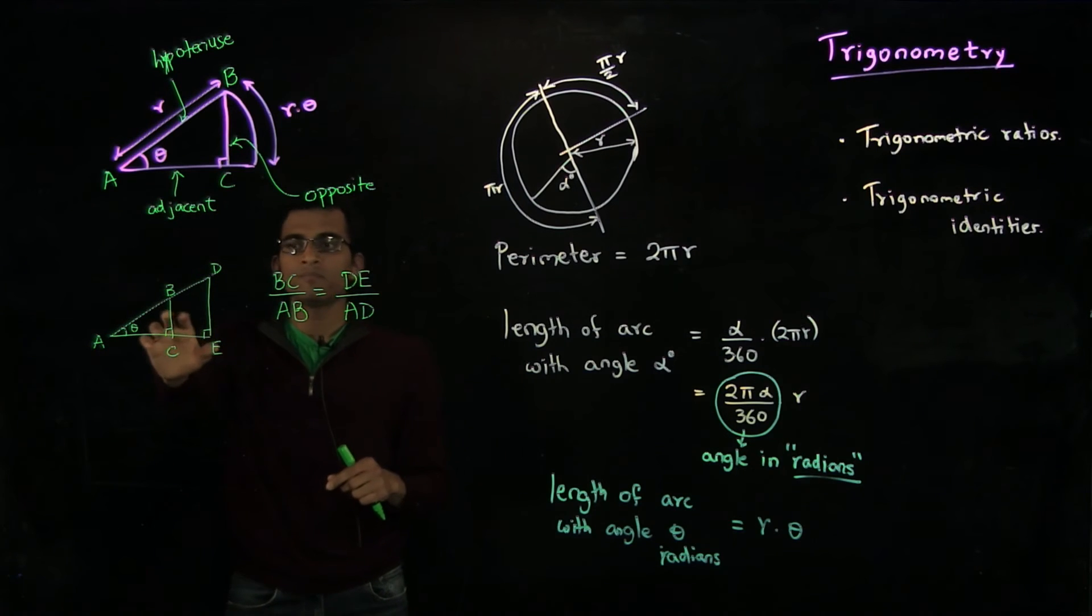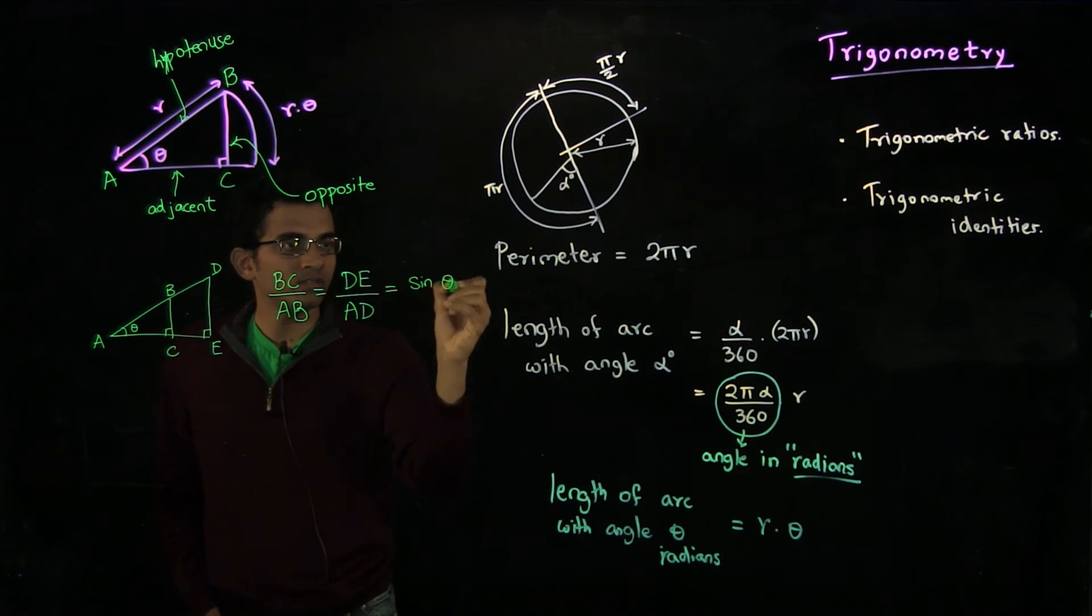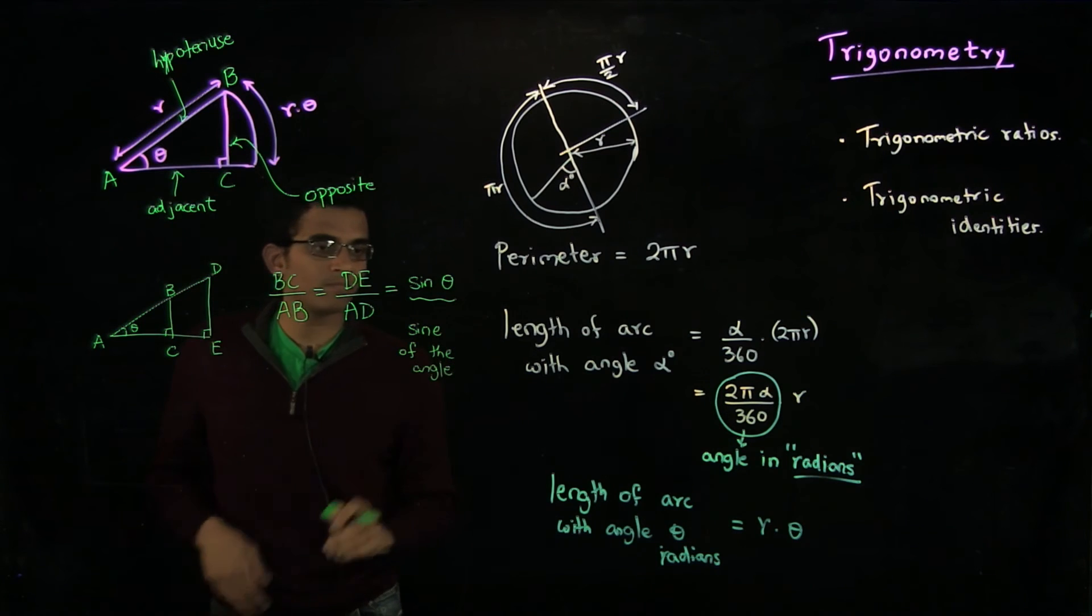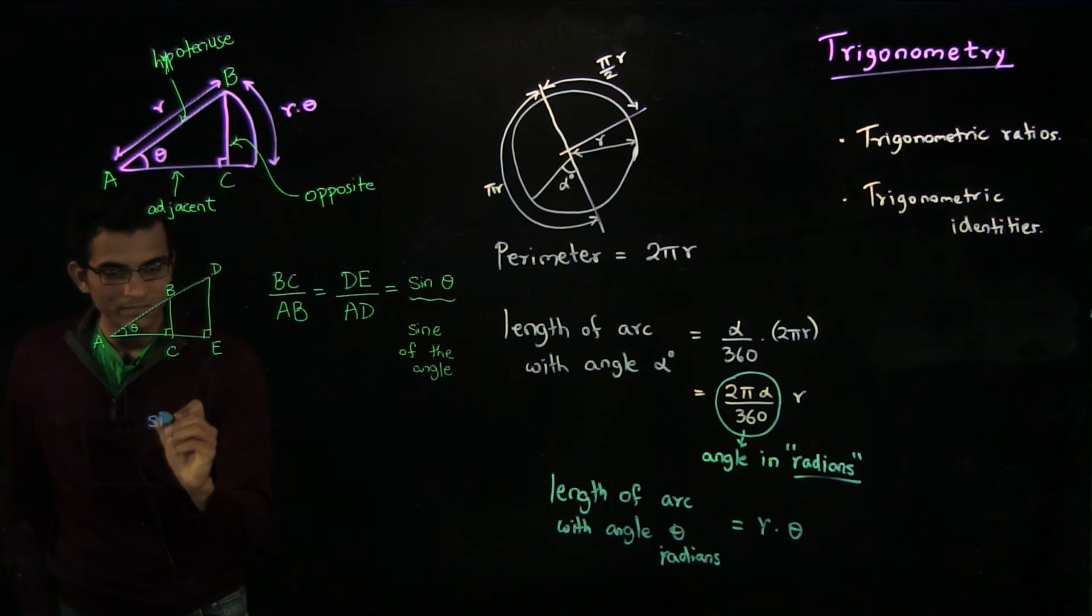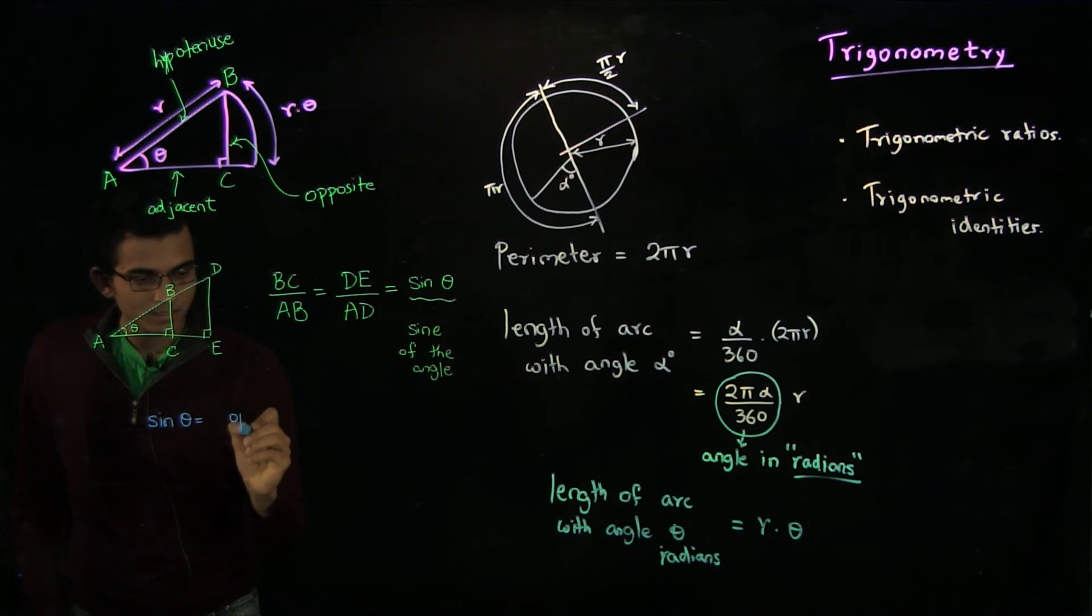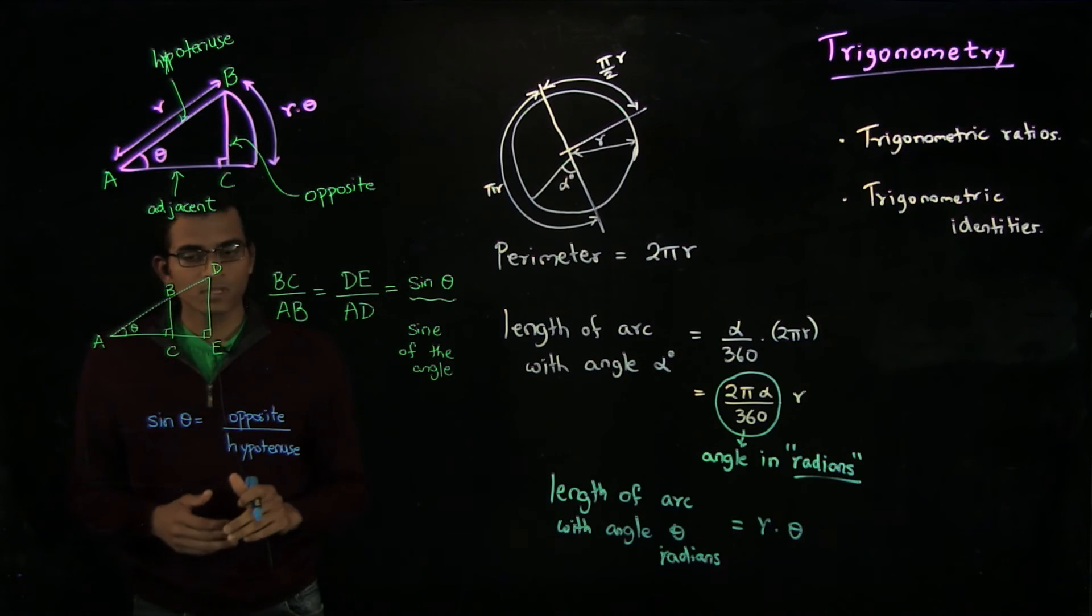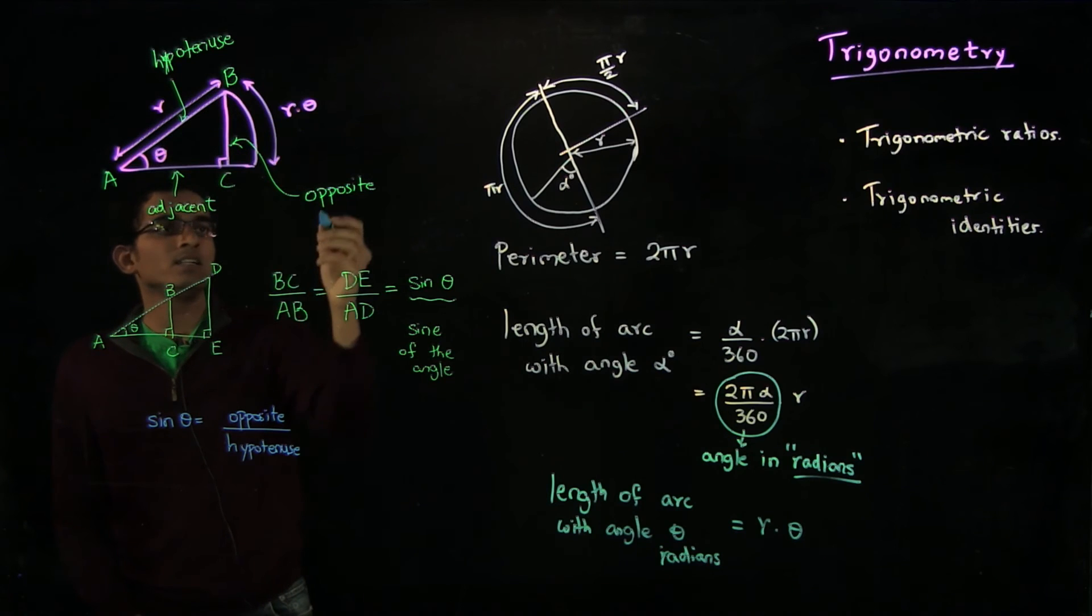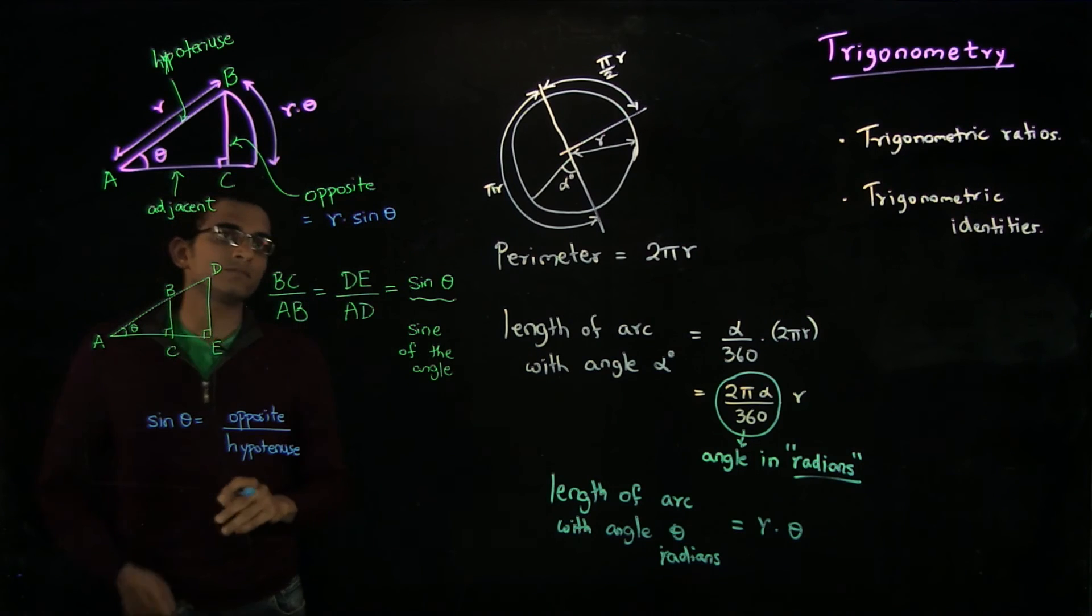Since, because of similarity of triangles, this ratio is purely a property of the angle and it is not a property of any of the sides. We define this quantity as the sine of the angle. To remember it more easily, sine theta is the opposite side divided by the hypotenuse. Now you would see that in this case, if the hypotenuse is R, the length of the opposite side is R times sine theta.